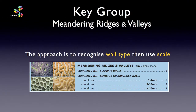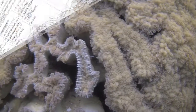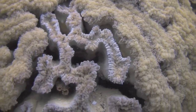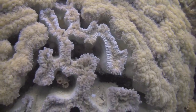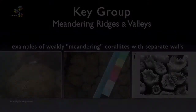The next part of the approach is to recognise the type of coralite wall shown by your coral. They are the same terms we have already met in the glossary and earlier movies. To give you a feel, let's look at some examples of meandering coralites with separate walls.